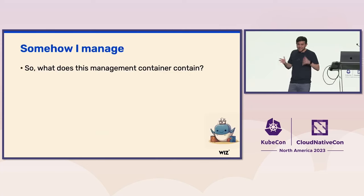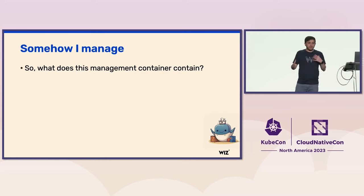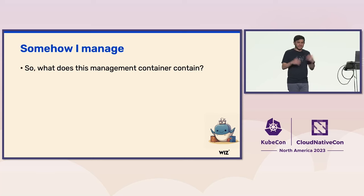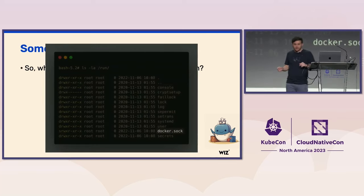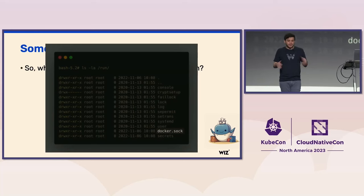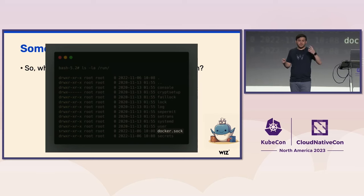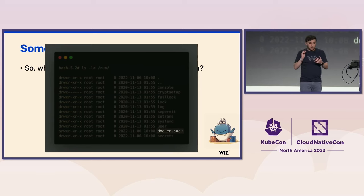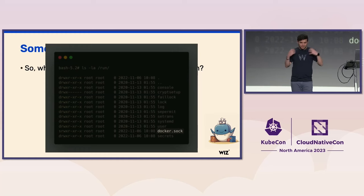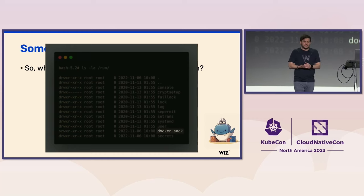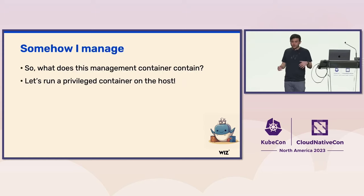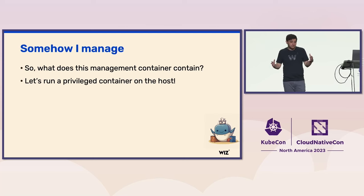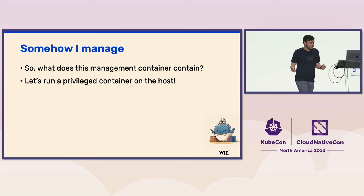So what does this management container actually contain? We started looking at files mostly, since that was the thing different between the two containers. Imagine our surprise when we came across the slash run directory and saw the file docker.soc. The Docker API listens for commands — run, create a new container, create a new image — and it can listen on either a TCP connection or a Unix socket, which is a file just like docker.soc. That means if we have write access to that file, we can write Docker API commands and the Docker API will run them. So we sent a command to the Docker API asking it to run a new privileged container on the host — and it did. We got a reverse shell back from the Kubernetes node itself.